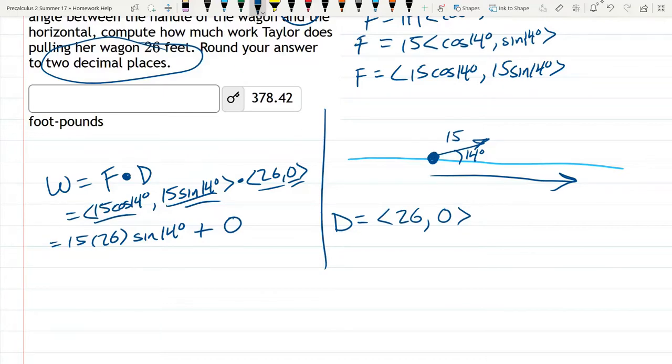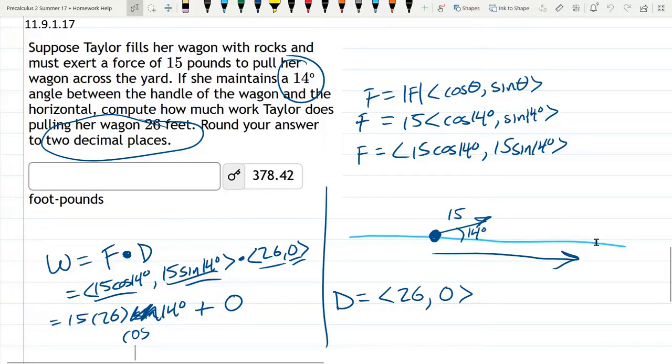So if you're following along, you probably saw me make a mistake. I put the sine function in here, but we're multiplying the first coordinate with the other first coordinate, so it should be cosine 14 degrees, not sine of 14 degrees. That second one is multiplied by 0, and it will not show up. So make sure you have your cosine function in there.